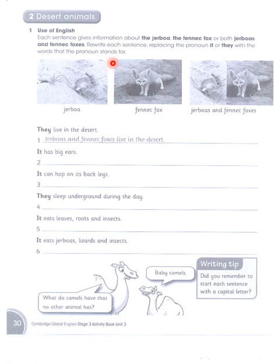I'll be preparing grammar lectures separately so you can understand grammar as well. Here the pronouns need to be replaced with the nouns. Jarboa is a noun; Fennec Fox is a noun; Jarboas and Fennec Foxes are nouns. We replace the pronouns with these nouns.